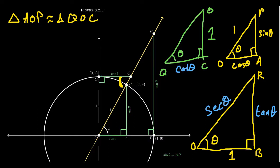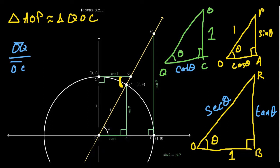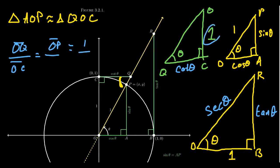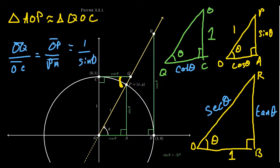For the last side, we take OQ divided by OC. OC equals 1 because it's the radius of the unit circle. OQ is the hypotenuse, corresponding to OP, which equals 1. OC corresponds to the opposite side PA, which equals sine theta. So OQ equals 1 over sine theta, which equals cosecant theta.